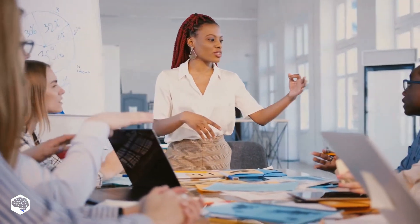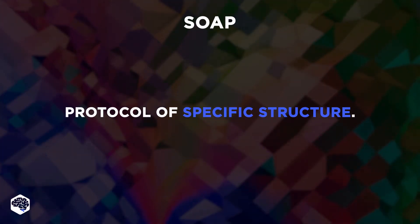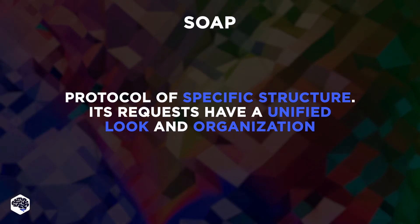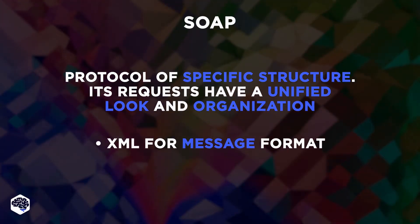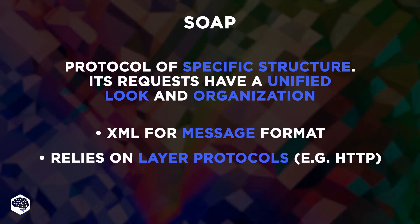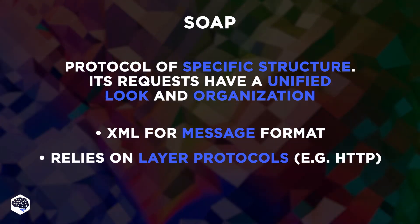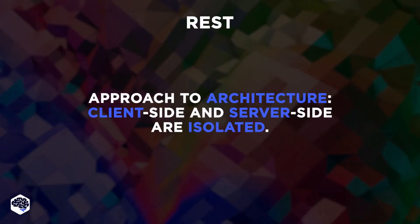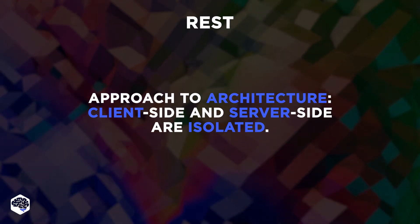Ready to find out the fundamental differences between REST versus SOAP? Let's figure them out. We'll start from the basic difference: protocol versus architectural style. SOAP is a protocol that has a specific structure. Its requests have a unified look and organization. SOAP uses XML information set for its message format and relies on application layer protocols, most often Hypertext Transfer Protocol. REST is not a protocol — it's an approach to architecture where the client side and server side are isolated.